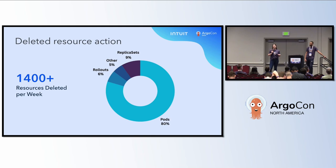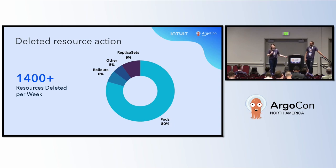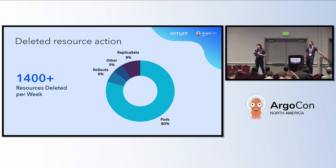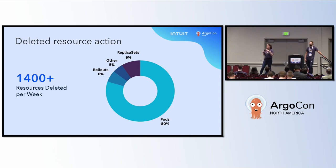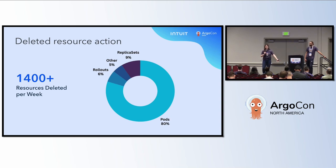Let's understand why developers are deleting resources. The number one use case is deleting pods. Developers see that maybe in the middle of a deployment a pod has become unhealthy, or pods have been running for an extended period and become unhealthy. Their instinct is: I need to delete this pod, restart it, and it could come back up healthy. For a lot of our internal runbooks, that is the first action they take when they see an unhealthy pod. This action on a single pod is significantly less dangerous than deleting something like a rollout, deployment, or replica set.